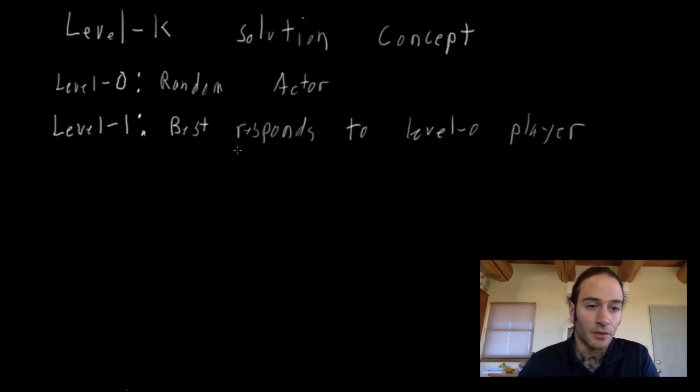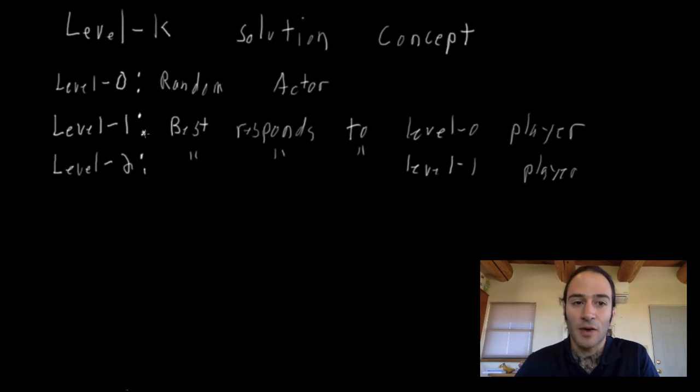What does a level two player do? Level two best responds to a level one player. So what a level two player is doing is it's saying, okay, I think that everybody else thinks, the level one players thinks that everybody else is acting randomly. So I'm going to choose my action subject to everybody else best responding to everybody else acting randomly.